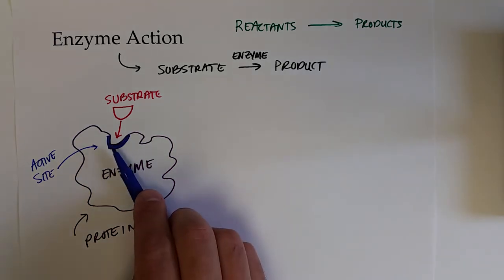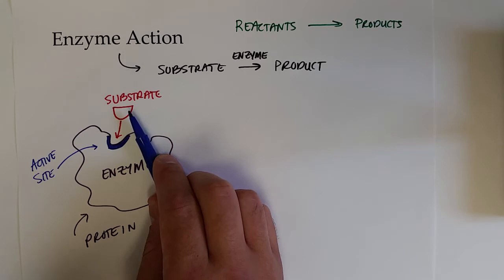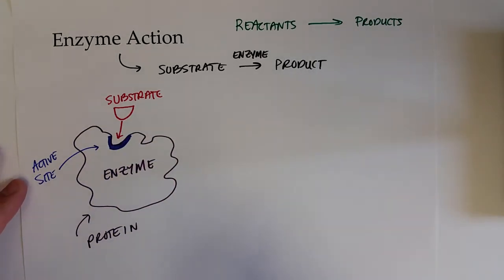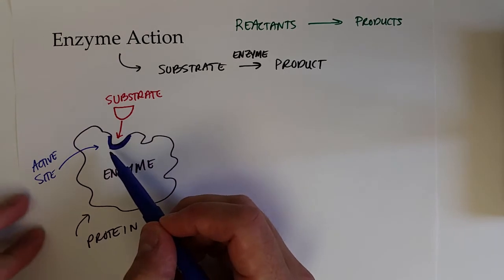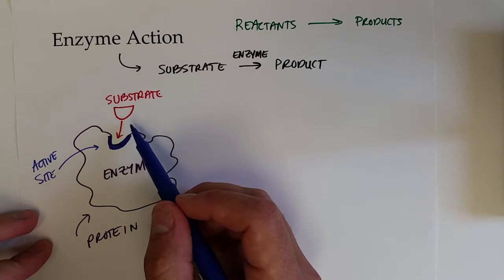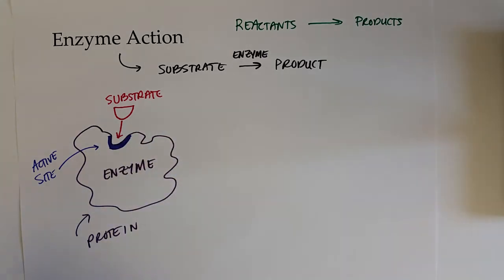If instead the enzyme's active site and/or the substrate induce changes upon one another, usually through intermolecular forces, where the shapes of either the active site and/or the substrate modify slightly so that the exact shape is induced after that change, that's called the induced fit model of enzyme action.